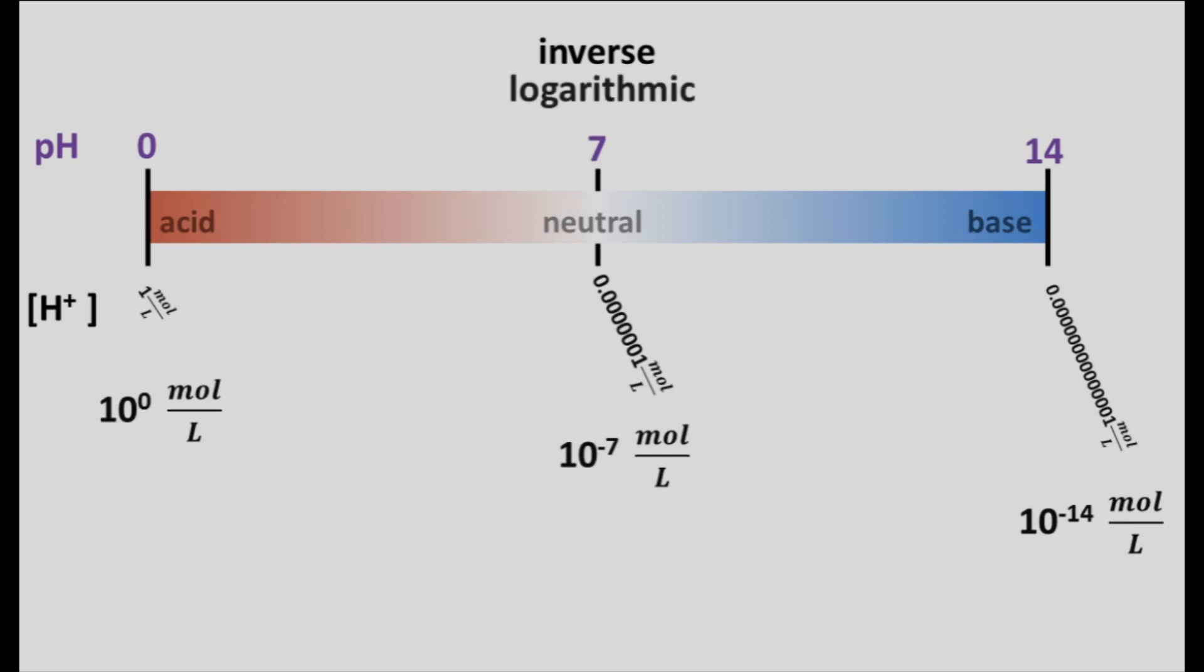The other thing to remember is that it's logarithmic. And that means it's not going up by one point at a time. Every point on the scale is a tenfold difference in the point behind it. And that means from a pH of seven to six, we're increasing the concentration of protons by 10 times. If we move from seven to five, we're increasing it by a hundred times.